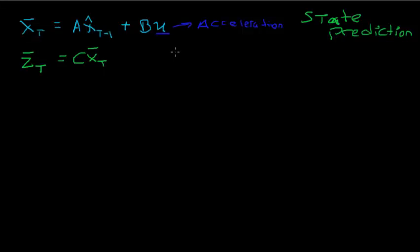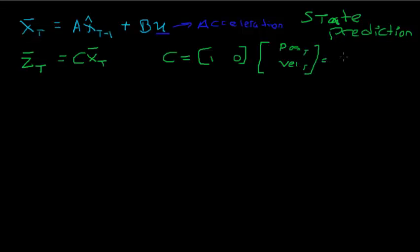z_bar(t) is equal to some matrix C times our predicted x_bar(t). In the case of position tracking, C is just going to equal the vector [1, 0]. Why? Because if we multiply [1, 0] times our estimated position at time t and estimated velocity at time t, what we get is just position at time t plus 0 times velocity. So z_bar(t) is just equal to position at time t — in matrix form even though this is really just a scalar.